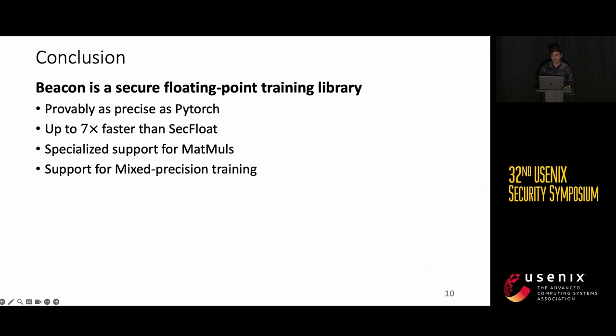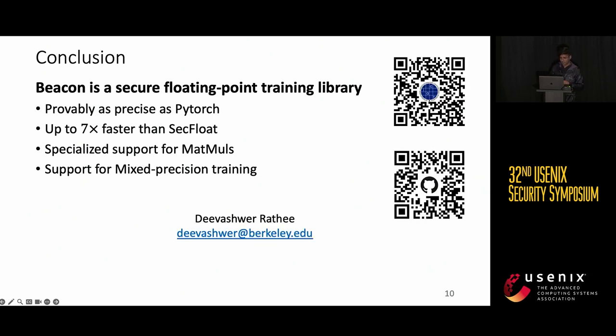In conclusion, Beacon is a secure floating-point training library, which is provably as precise as PyTorch and is also up to seven times faster than SecFloat. It achieves the speed-up through specialized support for matrix multiplications, as well as mixed precision training. Our paper and code are public, and thank you for your attention. I'm happy to take questions.